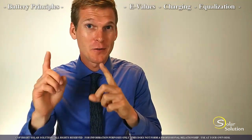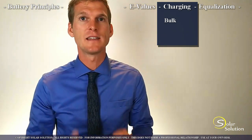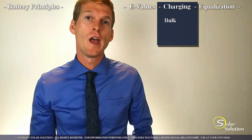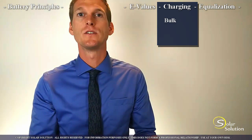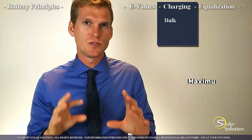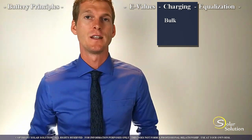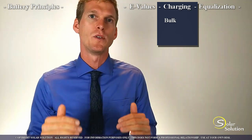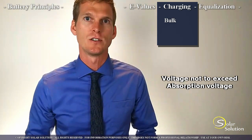Now that you're up to date with those two topics, we can look into the charging stages: bulk, absorption, and float. The first stage is bulk, in which the battery is typically less than 80% charged. In this stage we generally allow as much power to flow into the battery as possible, as long as we meet two conditions. First, the amperage flowing into the battery should typically not exceed 20% of the total amp hour rating. Second, as we push energy in, we don't want the battery voltage to go beyond a certain level — described as the absorption voltage — which is set in your charger devices.